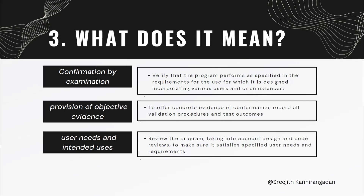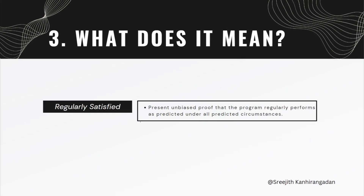The third phrase was 'user needs and intended uses,' which means reviewing the program — taking into account design and code reviews — to make sure it satisfies specified user needs and requirements. There was one more phrase: 'regularly satisfied,' which means presenting unbiased proof that the program regularly performs as predicted under all predicted circumstances. This means the system, when validated and tested, should not satisfy requirements only once, but every time in a controlled environment when we test it.